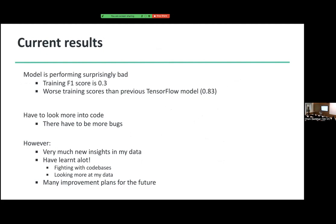My current results are surprisingly bad — the training F1 score is 0.3, which is worse than a previous model I trained in TensorFlow. So I think I need to look more into the code; there are probably more bugs beyond the normalization issue. I need to look at tuning hyperparameters and reviewing my code. However, I have gained a lot of new insights into my data. My biggest takeaway is learning how to handle a code base like TorchGeo and also to look more at the data throughout the whole process — during training steps, always examining what your code is doing with the data.